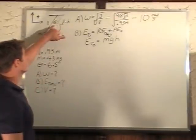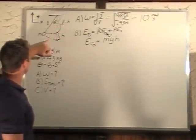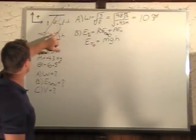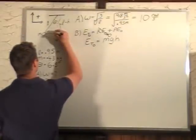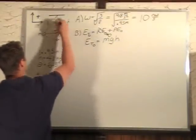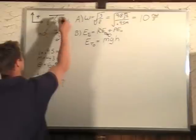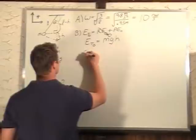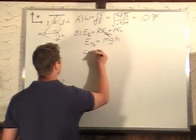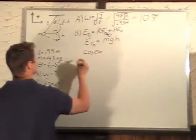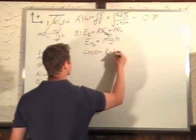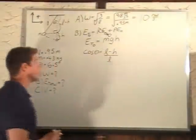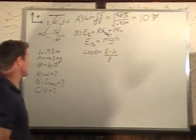What we want to do is find out what h is. We're going to use cosine of theta. Cosine is adjacent over hypotenuse, so cosine theta equals adjacent of l minus h over hypotenuse of l.